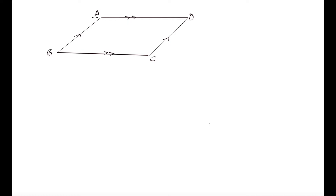A parallelogram has four line segments that are joined together, but what distinguishes it from other quadrilaterals is that we have opposite sides that are parallel. We can see that side AB is parallel to side DC, and side AD is parallel to side BC.